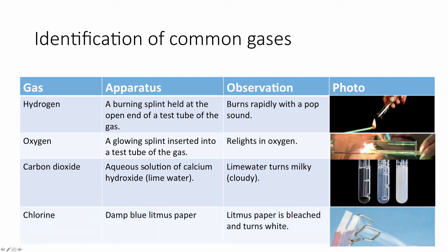And our last gas is chlorine. And that turns damp blue or red litmus paper white as it bleaches the litmus.